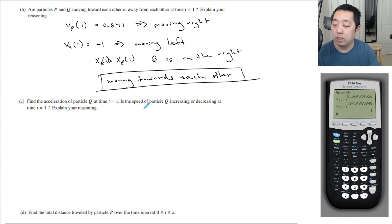Find the acceleration of particle Q. So I want the derivative of vQ, which is the acceleration dv/dt at t equals 1. And we're going to use our calculator for this.